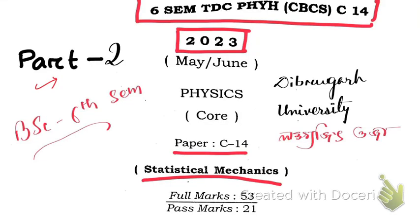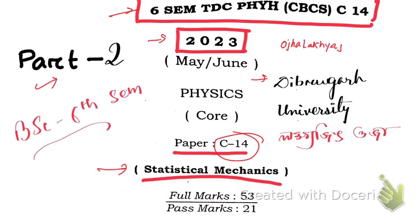Hello friends, this is part 2 of the solved paper of Statistical Mechanics C14, 2023, sixth semester, DB Gore University. Before we solve, please subscribe to the channel, hit the thumbs up button, and share with your friends to inspire me to create new content. You can also follow me on Instagram: ojhalakhy ajit123.